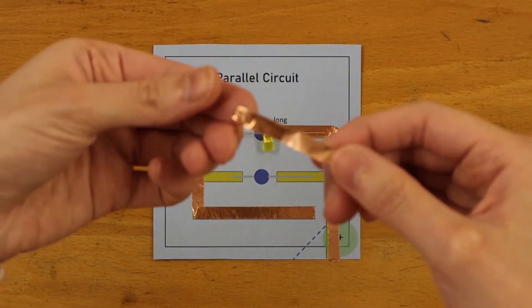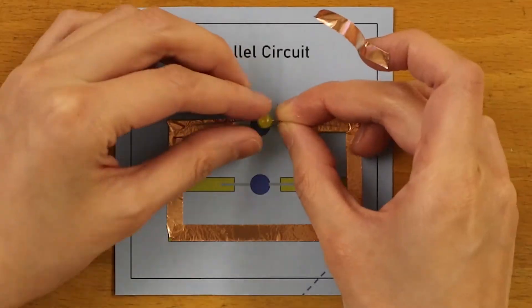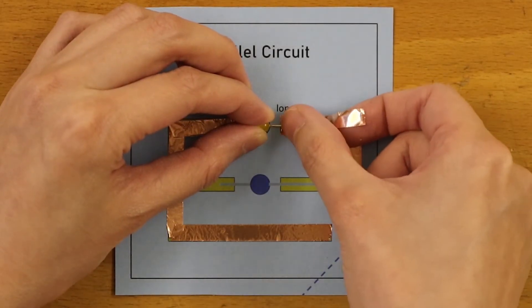Let's secure the connection of my LED to the circuits by using more copper tape, sticking it over the legs of the LED.